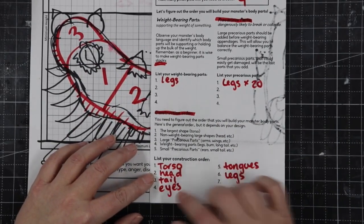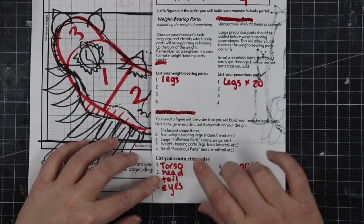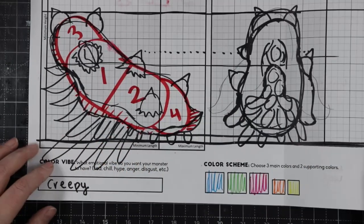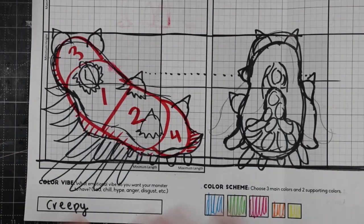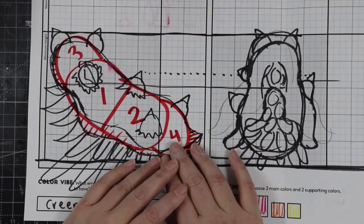Torso, head, tails, eyes, tongues, and then legs. So what I have to do now, all I'm doing today, the only thing I can do today is build the pinch pots.